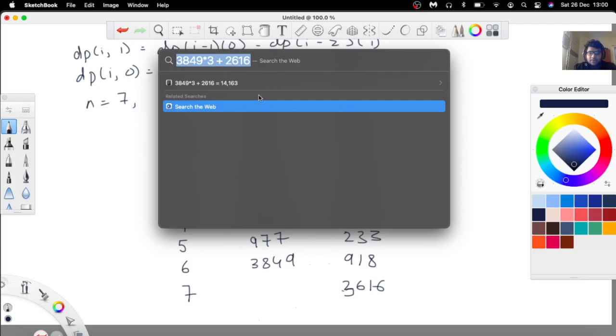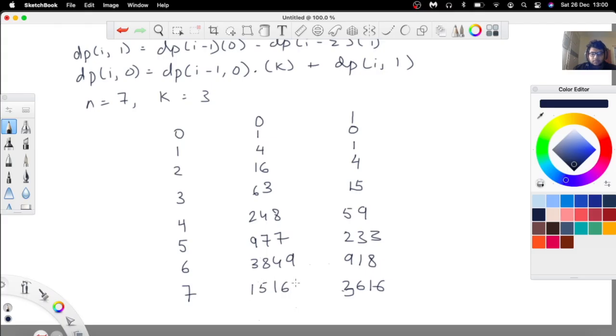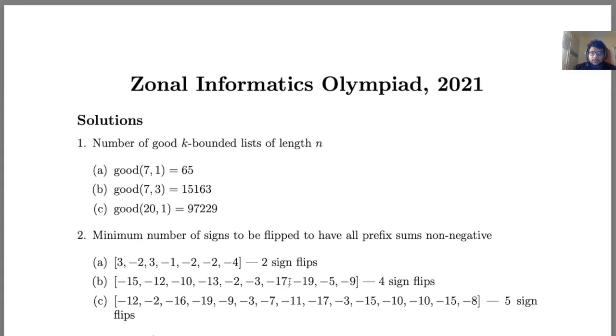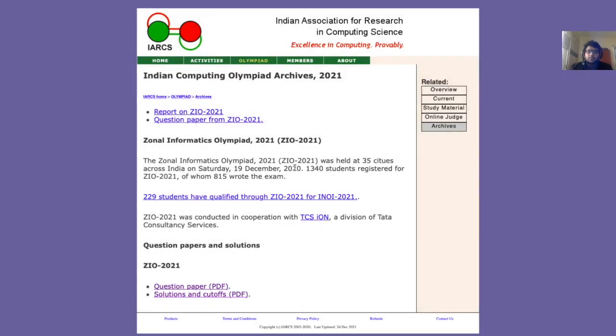And our answer for this test case is 15163. So it's just a small mistake. So over here, 3849 minus 233 is 3616. And so 3849 multiplied by 3 plus 3616 gives us 15163, which is the answer. So that's how you solve this problem guys.